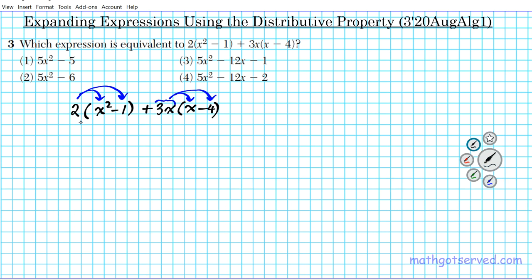Simplifying: 2 times x² is 2x², and 2 times −1 is −2. Then applying the same procedure: 3x times x — when multiplying exponents with the same base you add the powers — gives 3x², because 1 + 1 = 2. And then 3x times −4 is −12x.